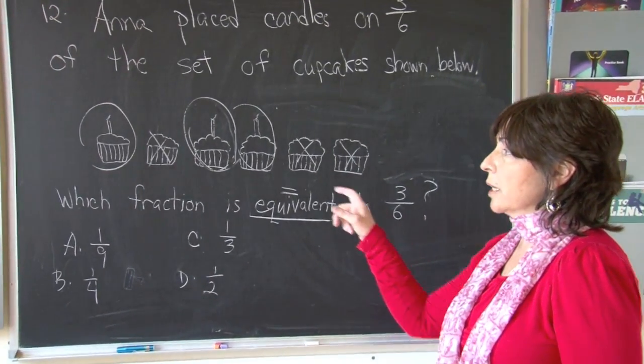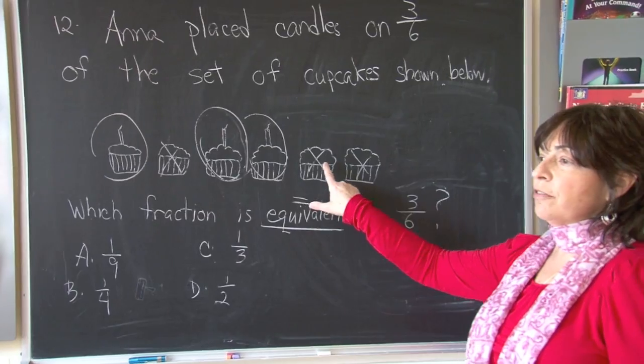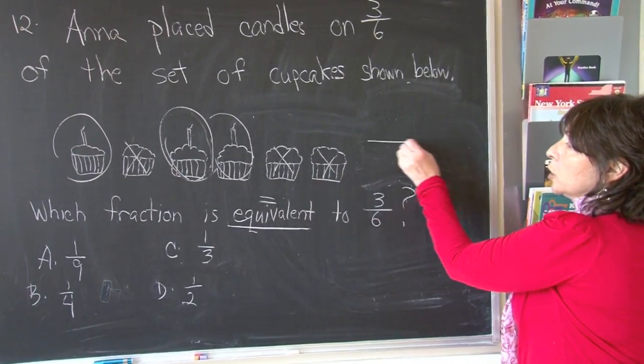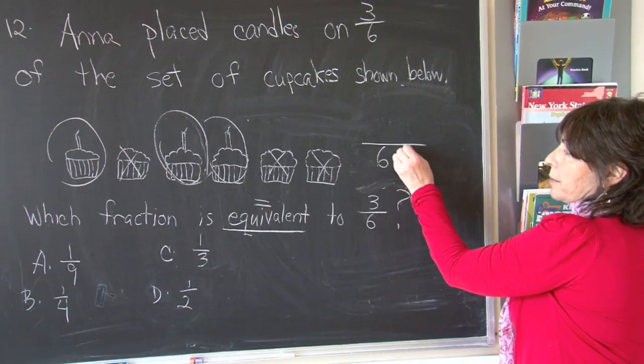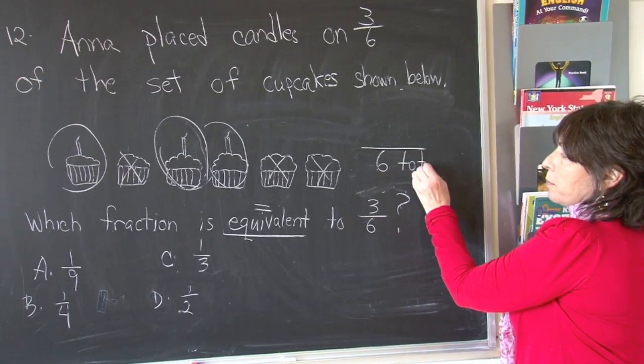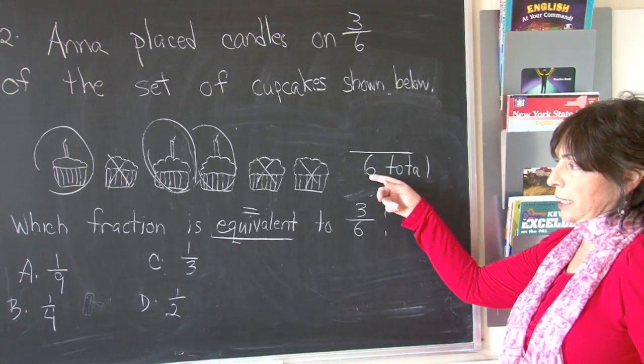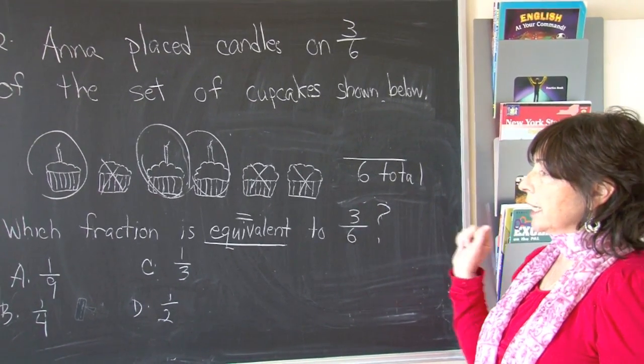Let's count all the cupcakes. One, two, three, four, five, six. The total number of parts becomes my denominator. The total is our bottom number or the denominator.